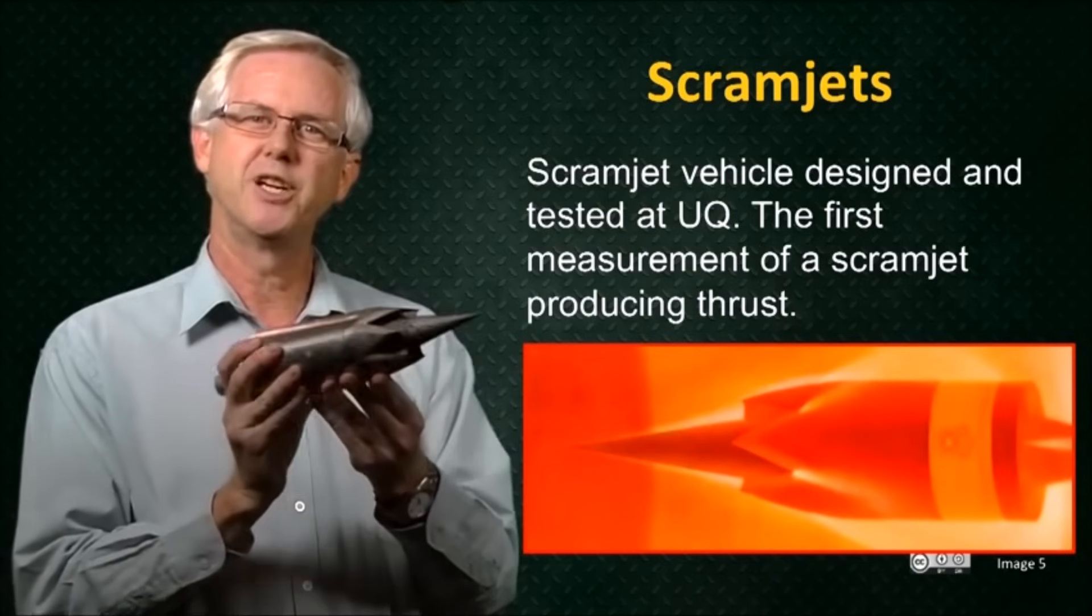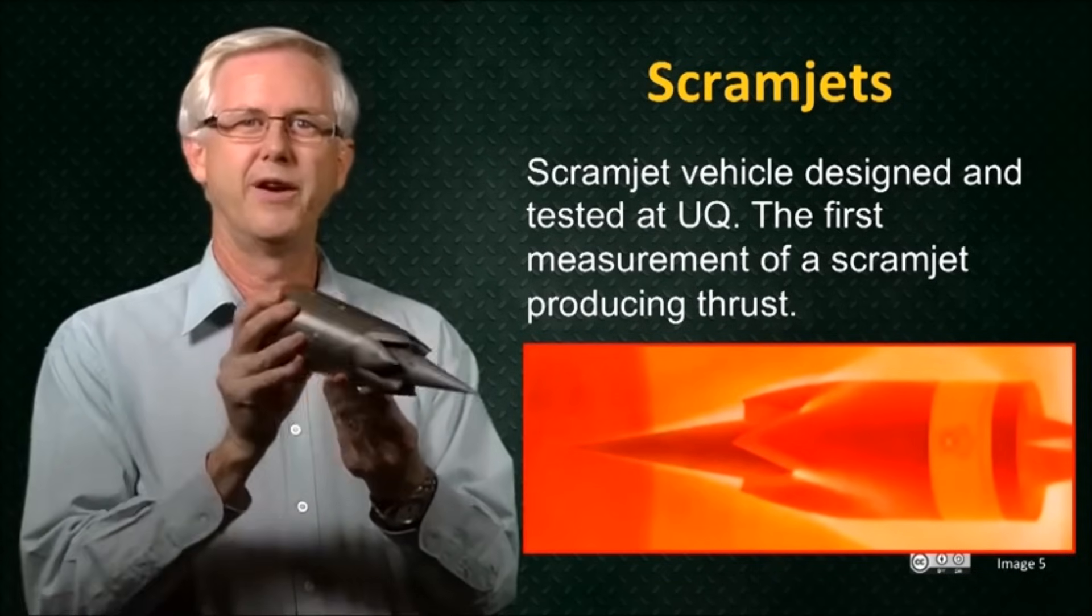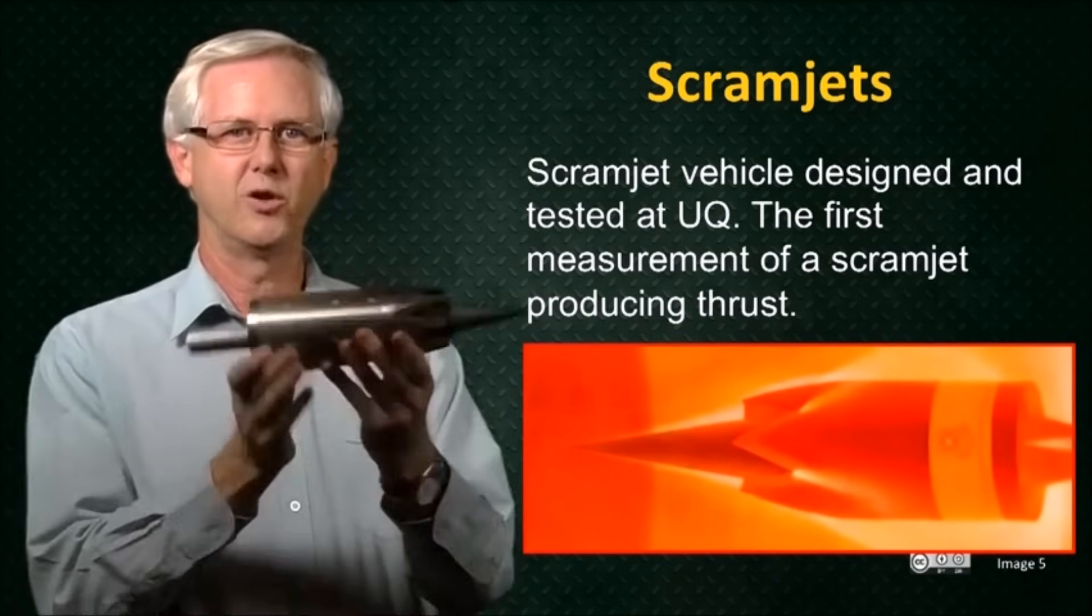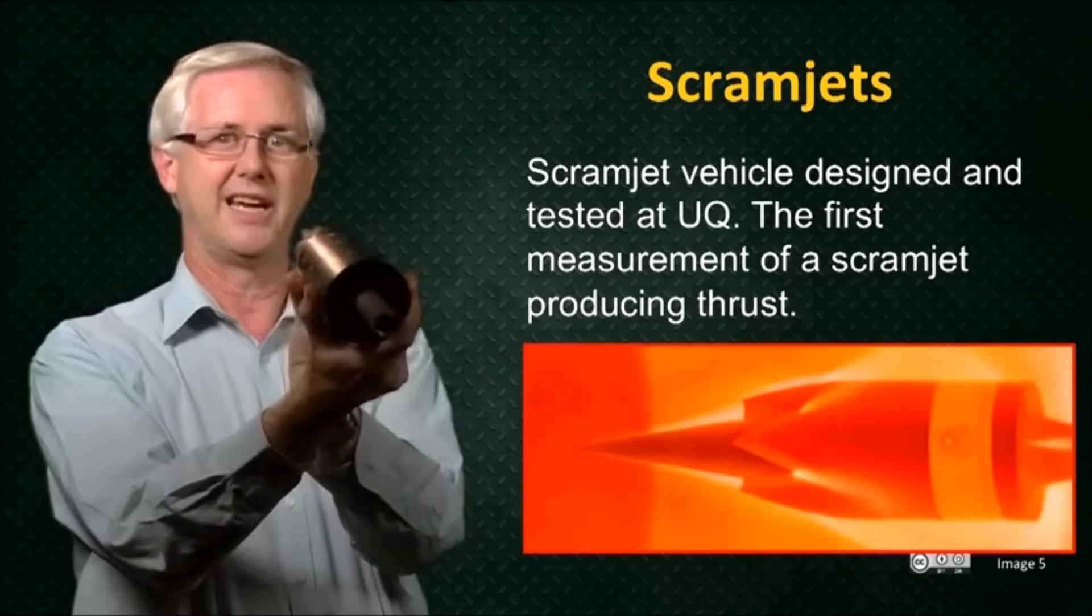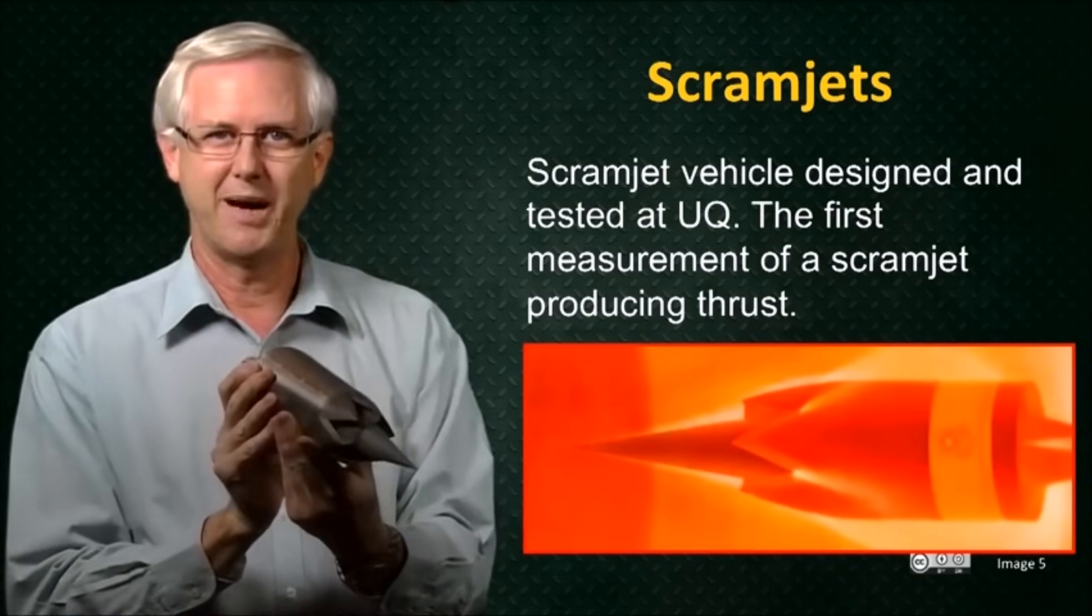You can see that a scramjet engine is very simple. There are no moving parts. So you can look straight through the engine from the intake to the exit and you don't see any moving parts inside.